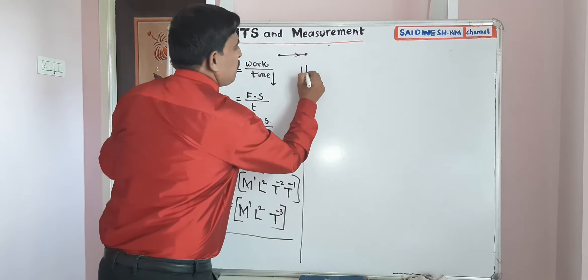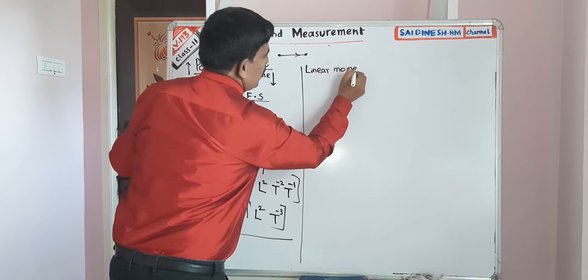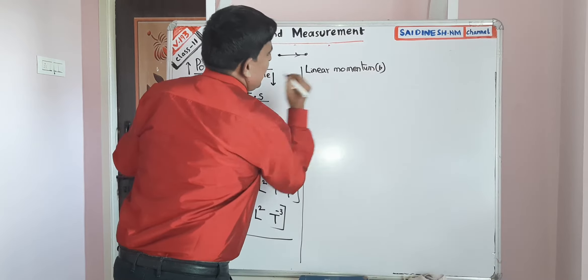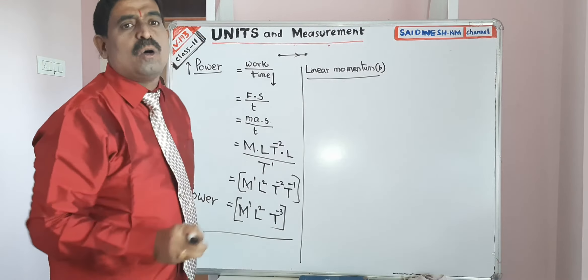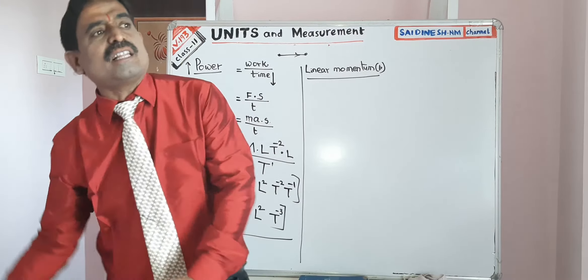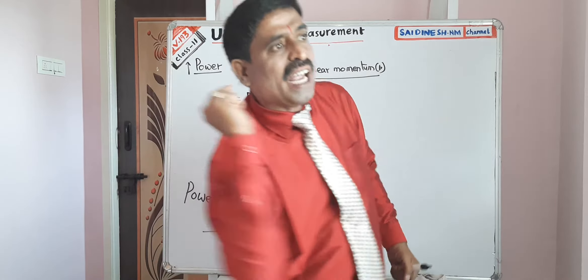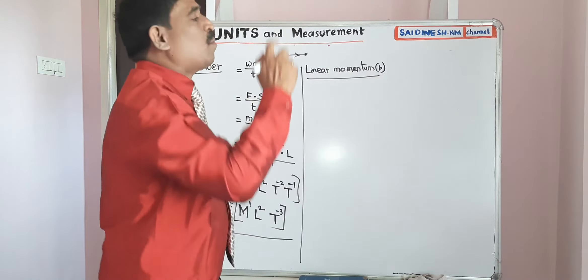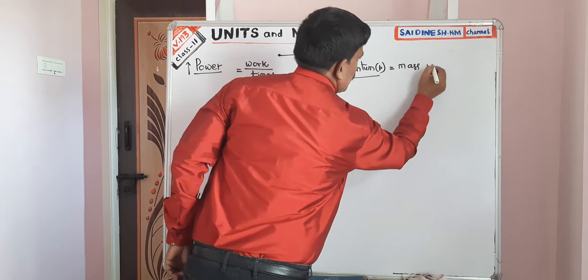Linear momentum is represented by the letter P. Suppose I have taken one small stone and I am throwing it into the air. The stone has some mass and is moving with some velocity. Mass into velocity — we are calling this linear momentum. Linear momentum means mass into velocity.